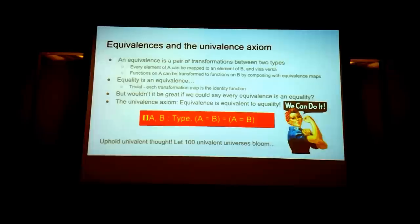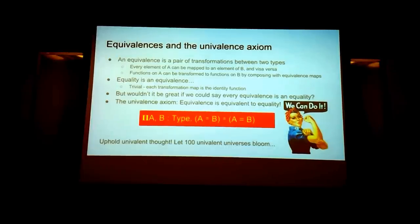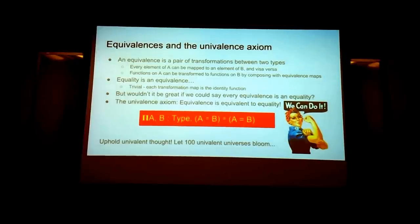The univalence axiom: an equivalence is a pair of transformations between two types — every element of A can be mapped to an element of B and vice versa. Functions on A can be transformed to functions on B by composing with equivalence maps. But wouldn't it be great if we could say every equivalence is an equality? This is what univalence is. We say: for all A and B where A and B are types, A equivalent to B is equivalent to A equals B. So we are upgrading what equivalence means to be equality.